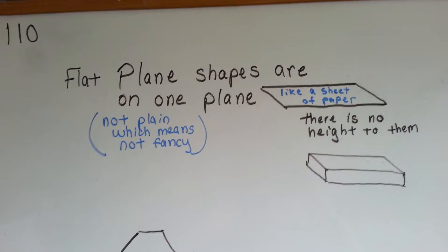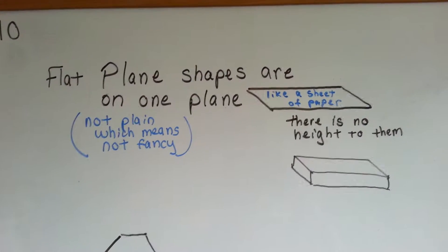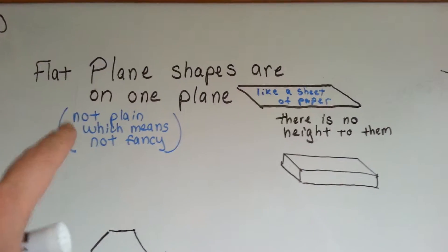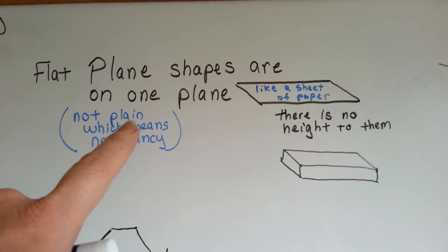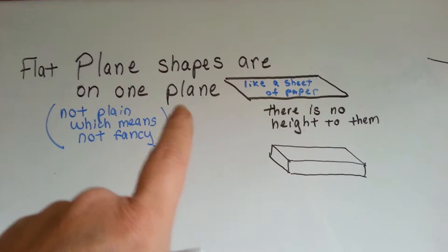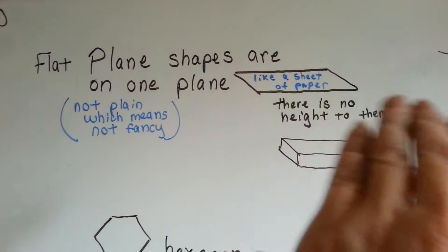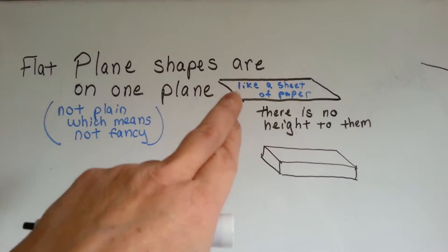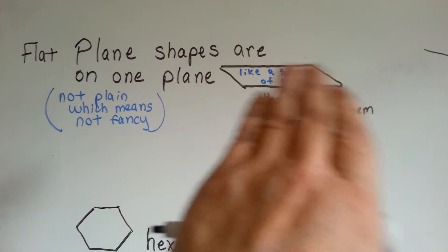What's a flat plane shape? Well, it's shapes that are on one plane. Not plain, which means not fancy—that's P-L-A-I-N. This kind of plane means a level. There's no height to a sheet of paper. It's on one plane.